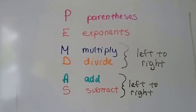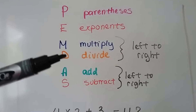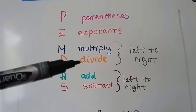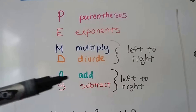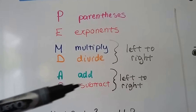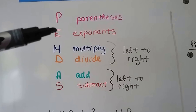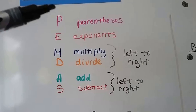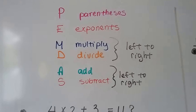Some of you might be familiar with this already. It's parentheses, then exponents, then we multiply and divide from left to right — so whichever comes first, left to right. Then we add or subtract from left to right, whichever comes first. These are grouped together, and these are grouped together. But parentheses are always first and exponents are always next. If an expression doesn't have parentheses or exponents, you skip and go to the next order in the list.